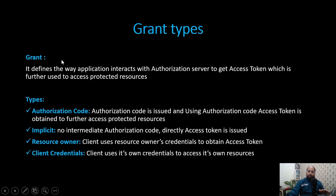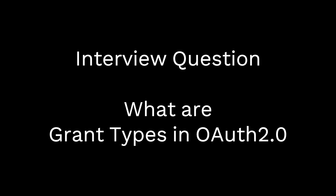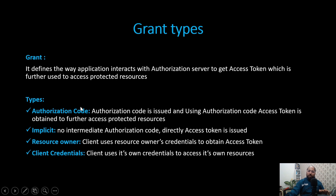Now these are the grant types. What is a grant type? It defines the way an application interacts with the authorization server to get the access token, which is further used to access the protected resources. Grant type is a way how we can get that access token from the authorization server. There are different types of grant types, and depending on the need, we can use the appropriate one.